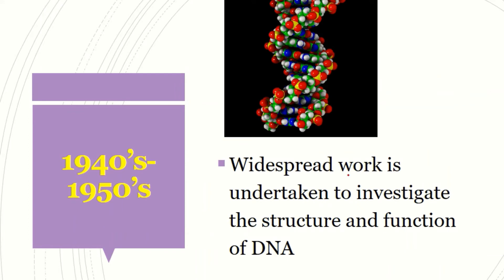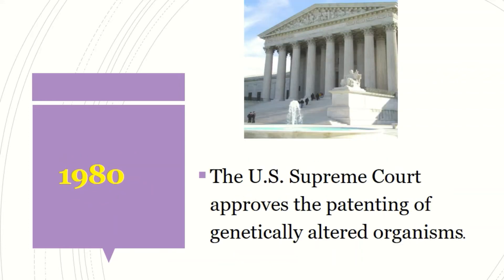We also had widespread work undertaken to investigate the structure and function of DNA. We had discovered DNA, but now knowing it is a double helix, what is it made up of? That was worked on in the 1940s. Then around 1980, we had the issue of GMOs — genetically altered organisms. The very first patent was approved by the U.S. Supreme Court, accepting that there can be genetically altered organisms, although biotechnology is an area with a lot of ethical issues.